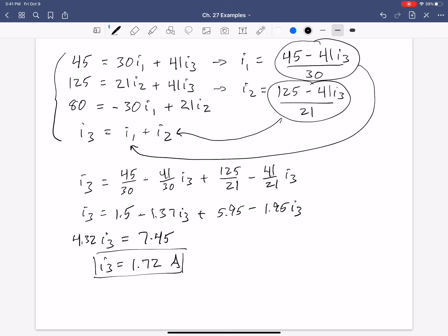So, now that we have I3, we can take that and plug it into any equation up here from the loop rule for I3. It doesn't matter. Actually, I'll plug it in right here. So, that I1 is equal to 45 minus 41 times our 1.72 and all that over 30. And this should come out to our answer from the previous slide, negative 0.86.